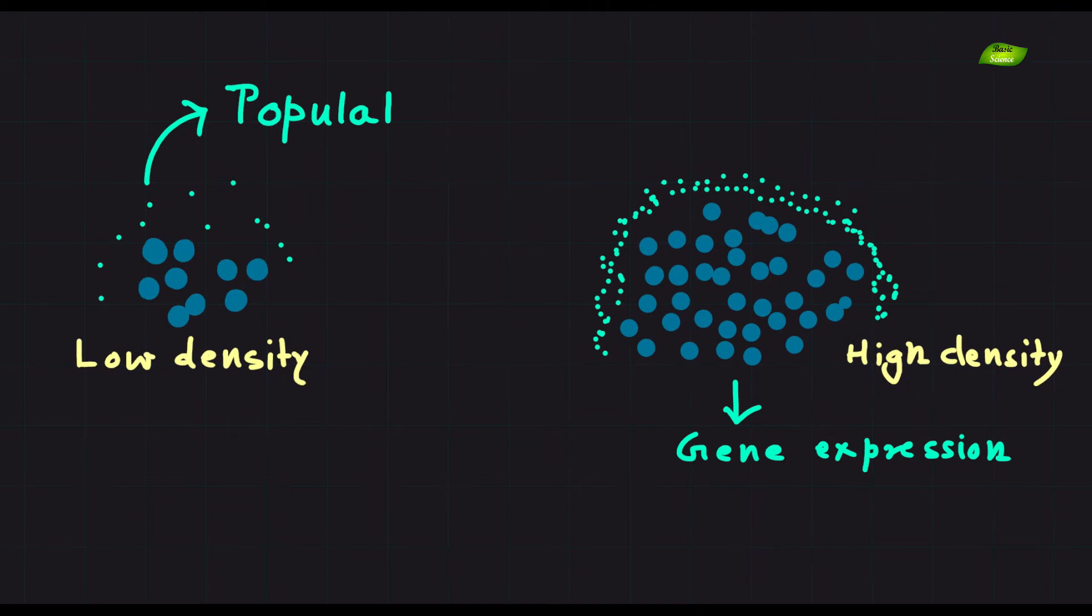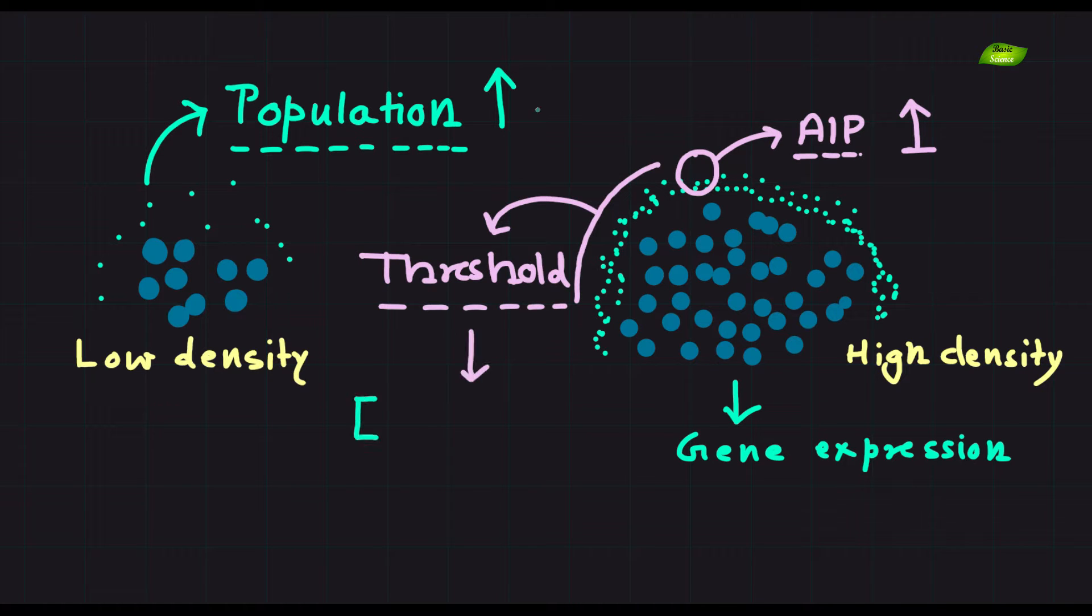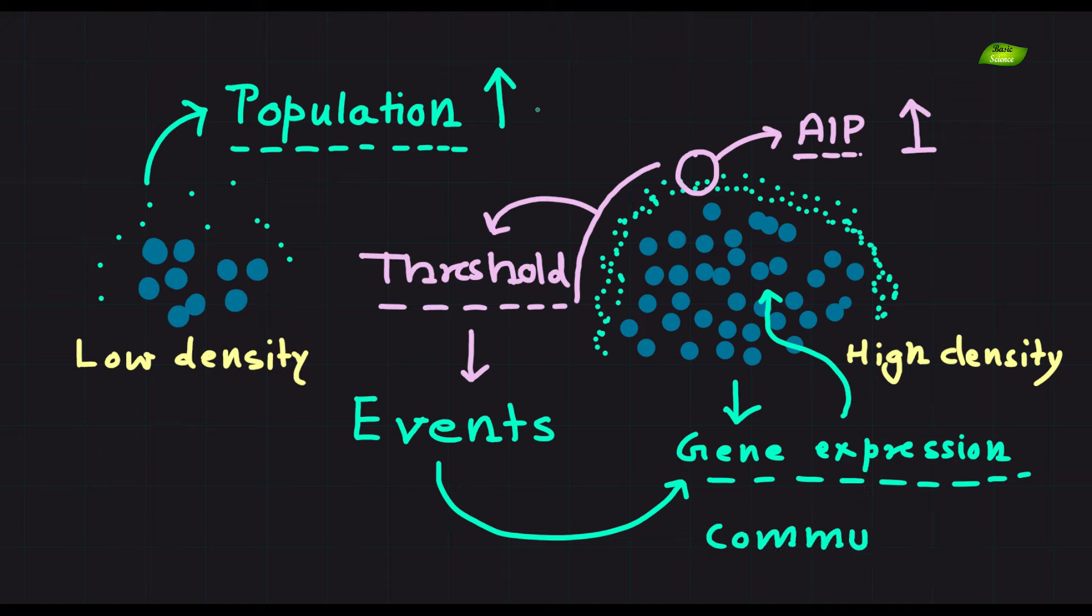As the bacterial population density increases, the concentration of AIPs reaches a critical threshold, triggering a cascade of events that regulate gene expression within the community.